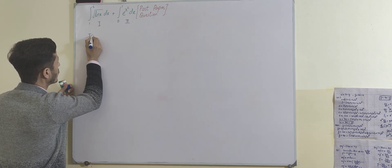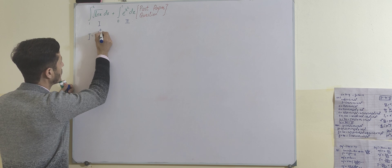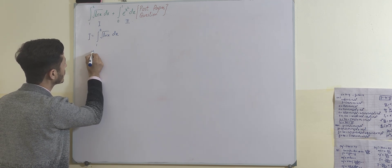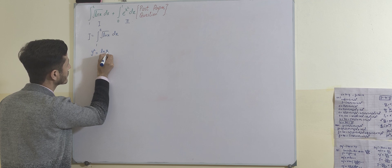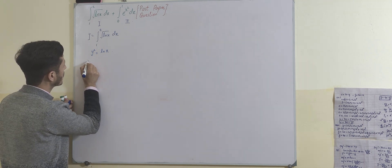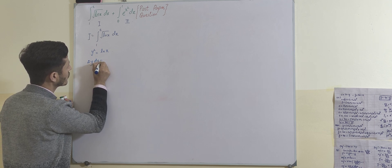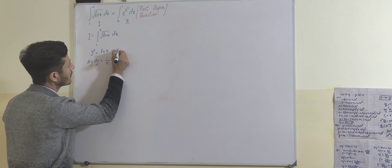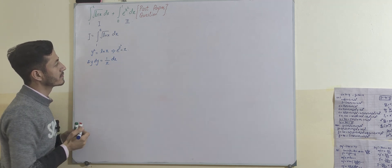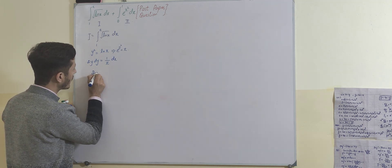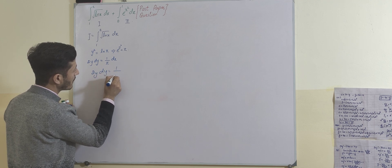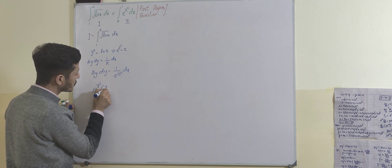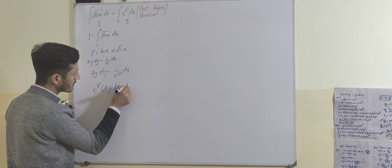The first part is I = integral from 1 to e of √(ln x) dx. We use the substitution y² = ln(x). Taking the differentiation gives 2y dy on one side and dx on the other. From here x = e^(y²), so by placing this value we get 2y dy = (1 / e^(y²)) dx, which means dx = e^(y²) · 2y dy.